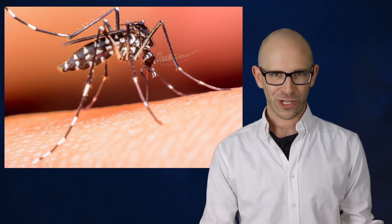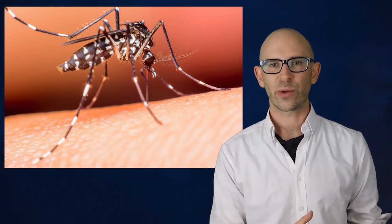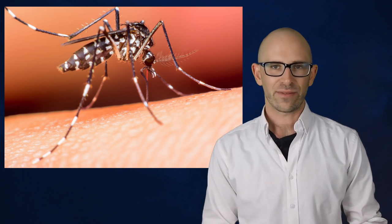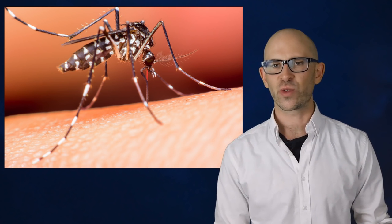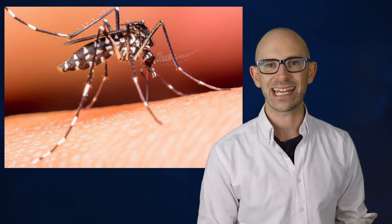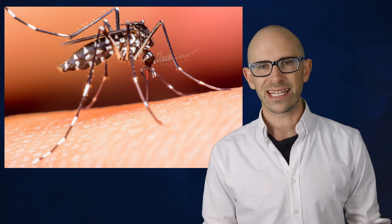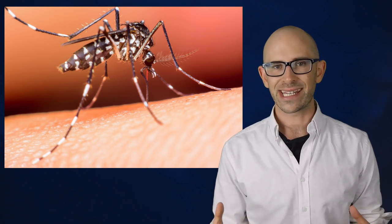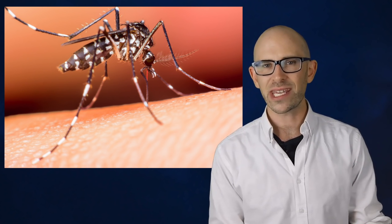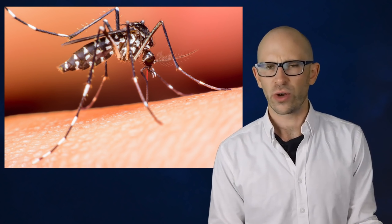Mosquitoes are the bane of anyone who steps outside during the hours around dusk and dawn. If not caught in time, the creatures take a drink of blood and then leave behind an itchy bump and maybe a disease or two. But very rarely do the insects come out for a meal during daylight hours unless the sky is cloudy. So, where do mosquitoes go during the daytime?